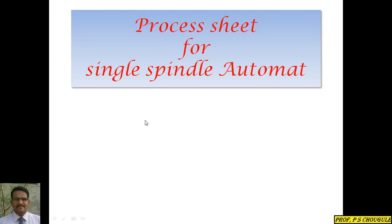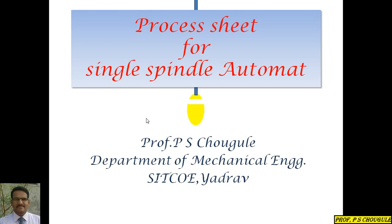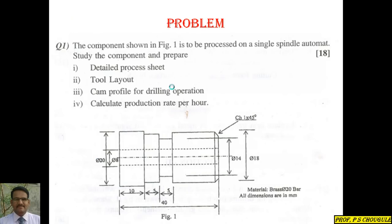Good morning friends. We will discuss the process sheet for a single spindle automat. I am Mr. P.S. Tawgule from SIT COE YADRAV. We will discuss the process sheet for this component. This component is made of brass, which is of 20 mm diameter. Let us start with a detailed process sheet.